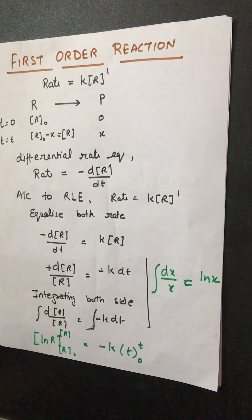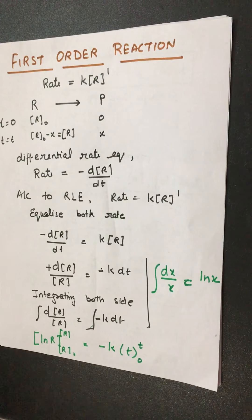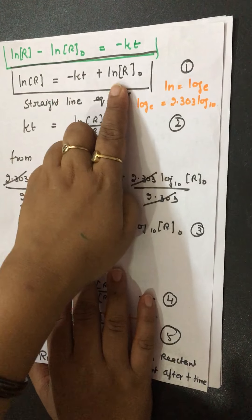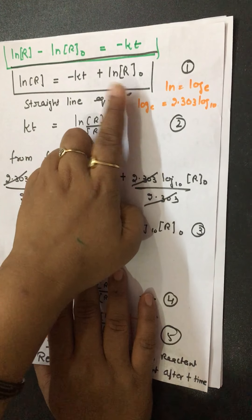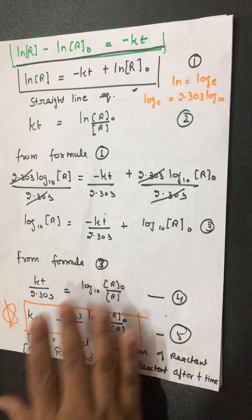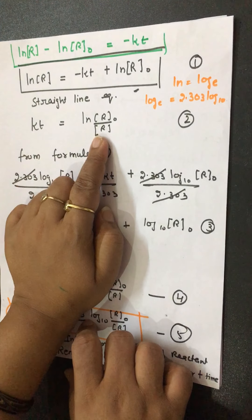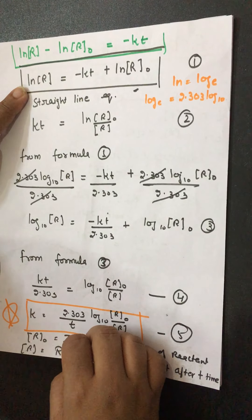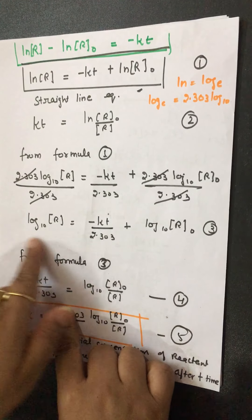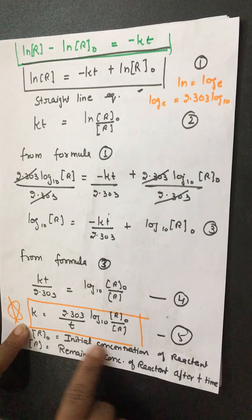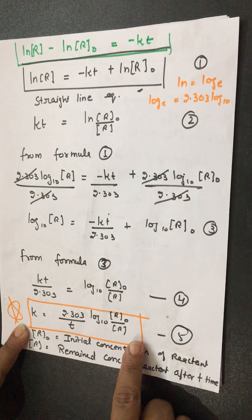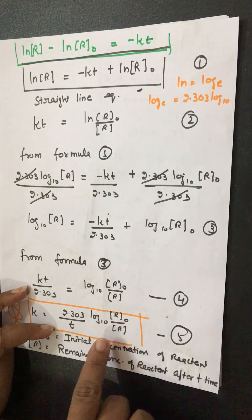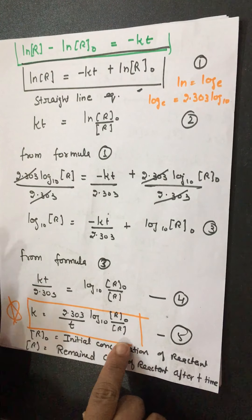To summarize: first order reactions have rate depending on concentration to the first power. Equalizing differential rate equation and RLE and integrating gives the integrated rate law: ln R equals minus kT plus ln R₀. Converting to log base 10 by multiplying by 2.303 and rearranging gives the very important formula: k equals 2.303 over t times log₁₀ R₀ over R. R₀ is initial concentration and R is concentration remained after time T.